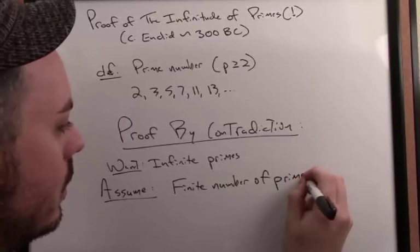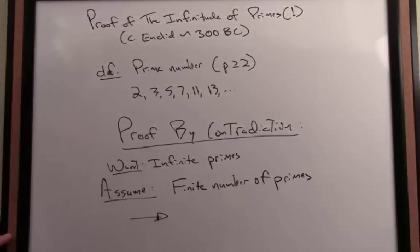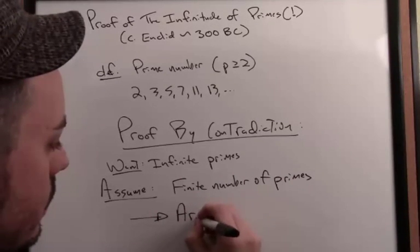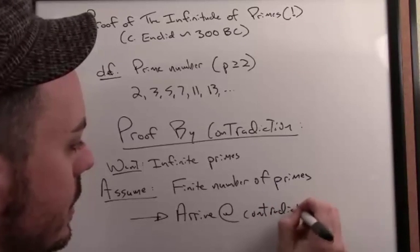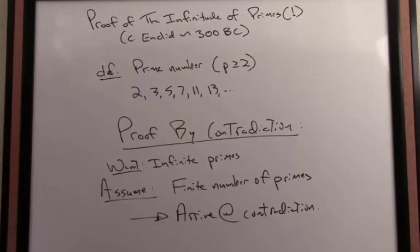And then we will show, logically, that this can't happen. In other words, we're going to arrive at a contradiction. And because we've arrived at a contradiction, that will conversely show that there must be an infinite number of primes.